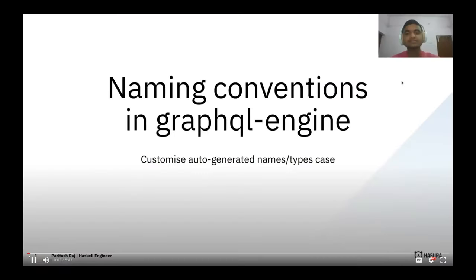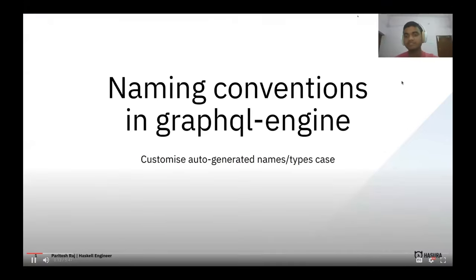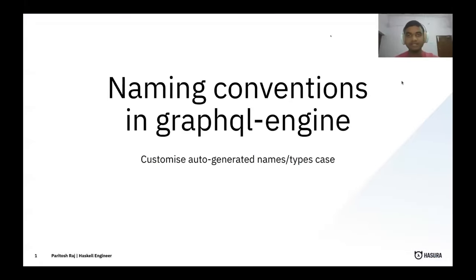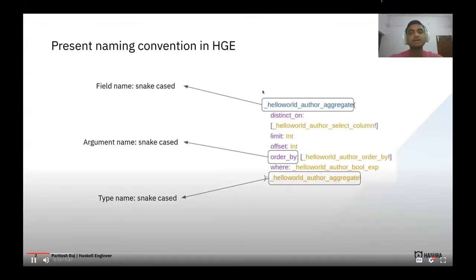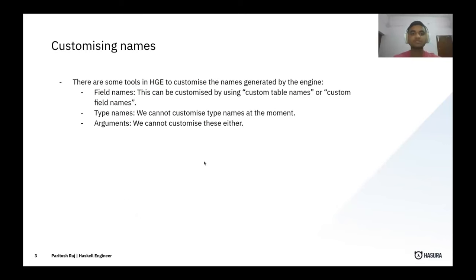Our next presentation is from Paritosh on camel casing. I work at Hasura and have been working on this new feature called naming conventions. Currently, if we have fields exposed in GraphQL, the field names are snake case, the arguments are also snake case, and the type names are also snake case. The GraphQL spec provides tools using which we can customize field names via custom field names or custom table names, but type names and arguments cannot be customized as of now.